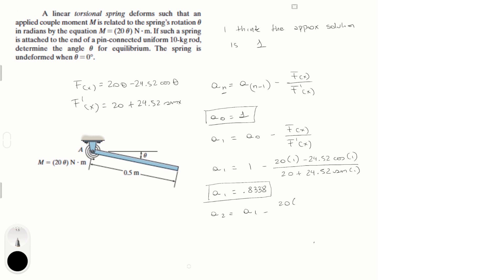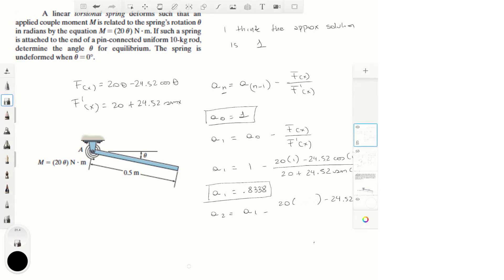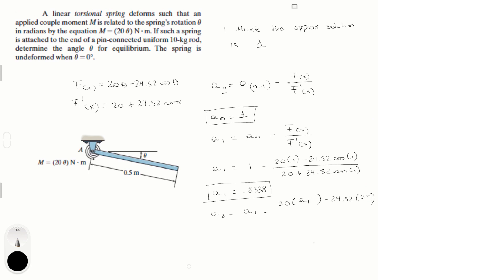Now we do this again: a_2 = a_1 − [20(a_1) − 24.52 cos(a_1)] / [20 + 24.52 sin(a_1)]. Plugging in a_1 = 0.8338 into this equation, you get that a_2 is equal to 0.8286.